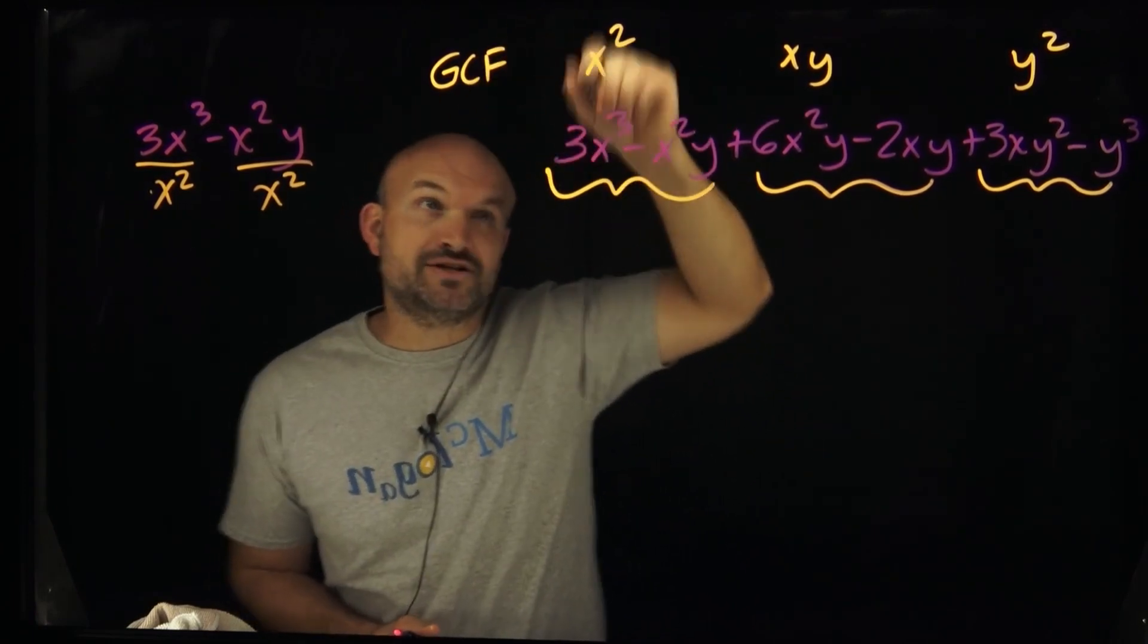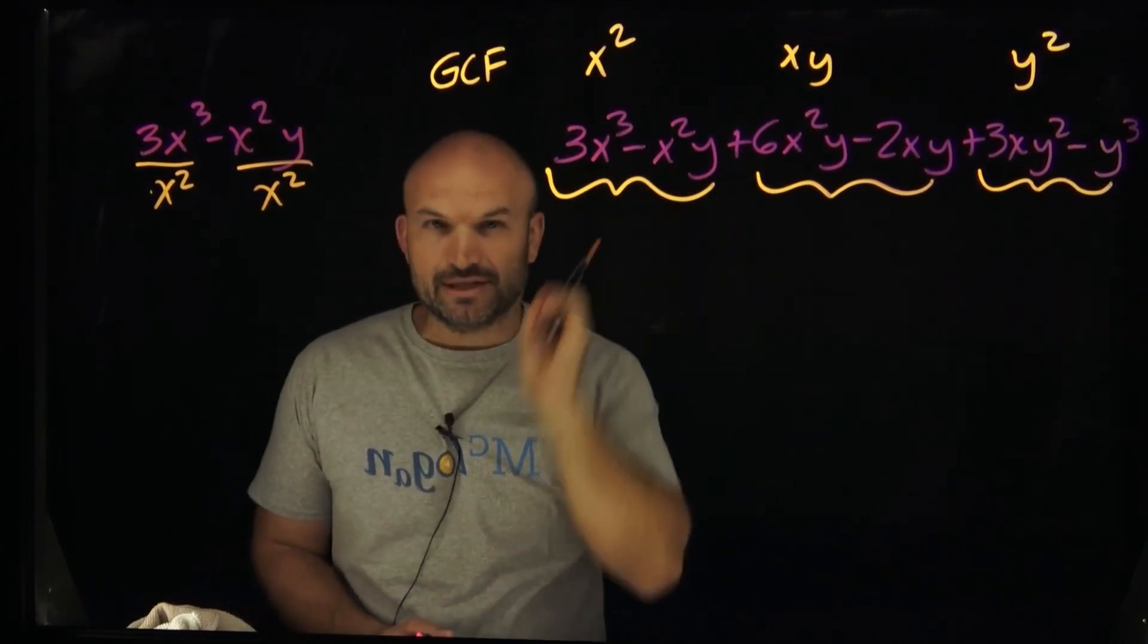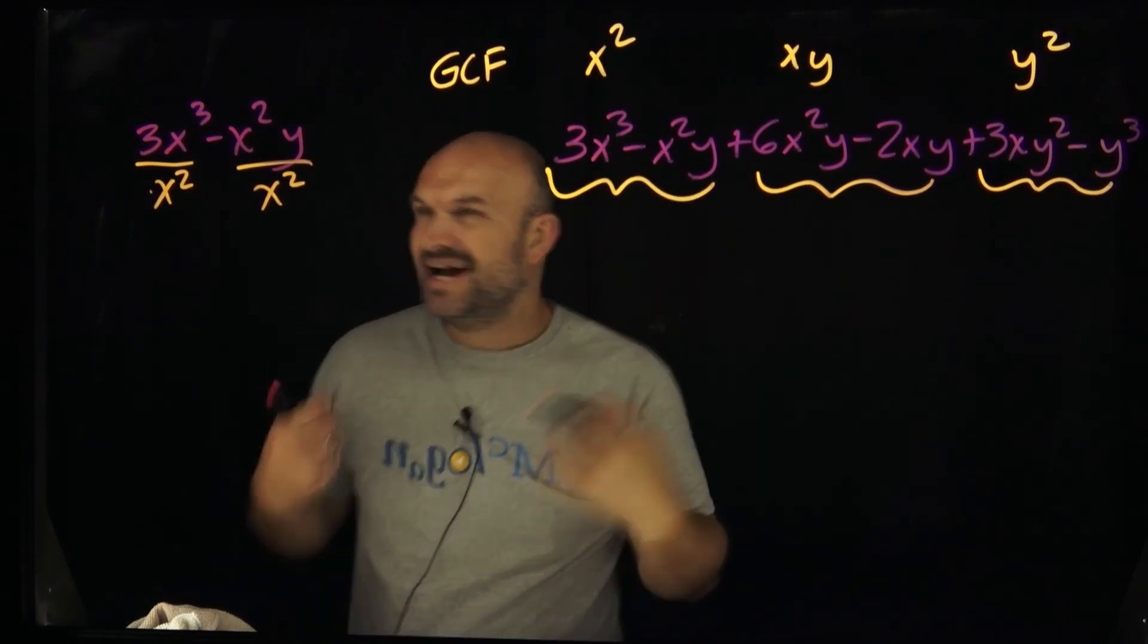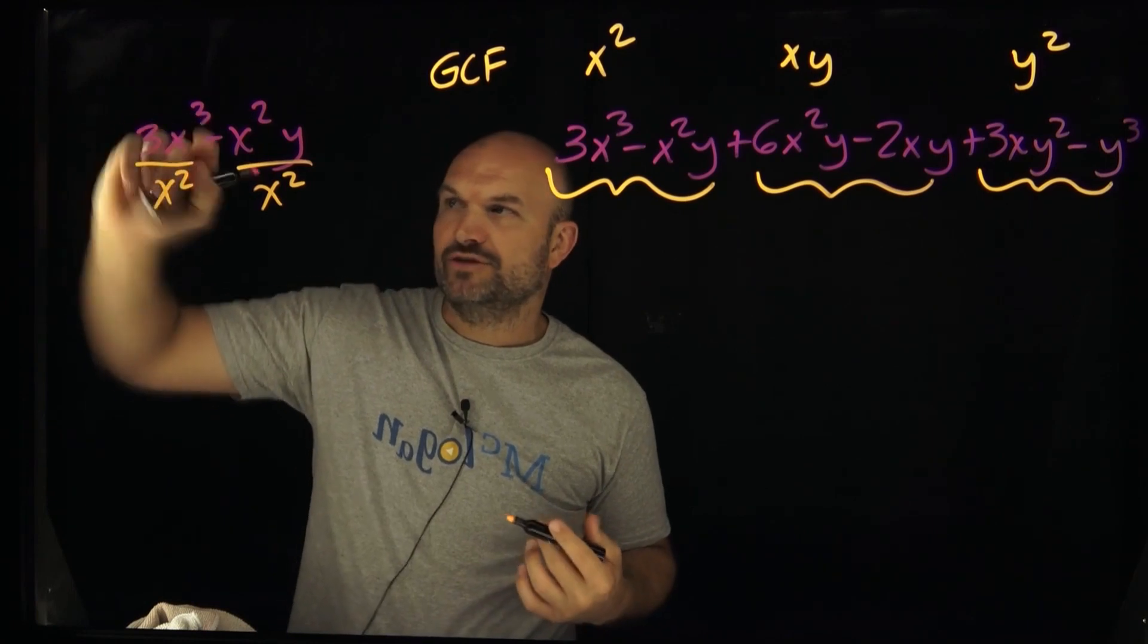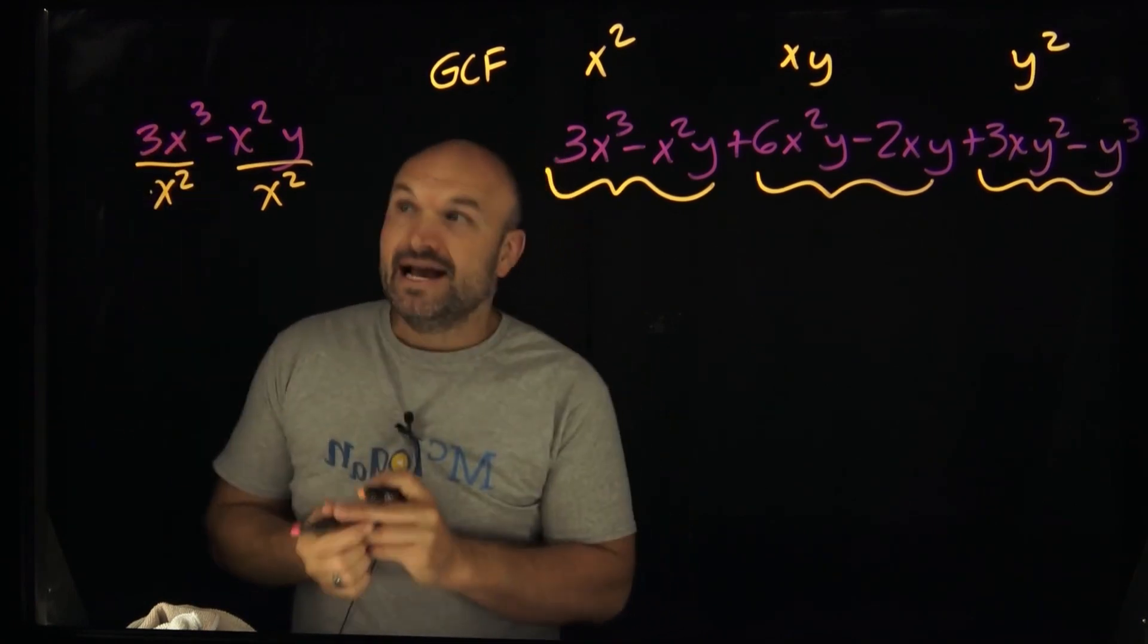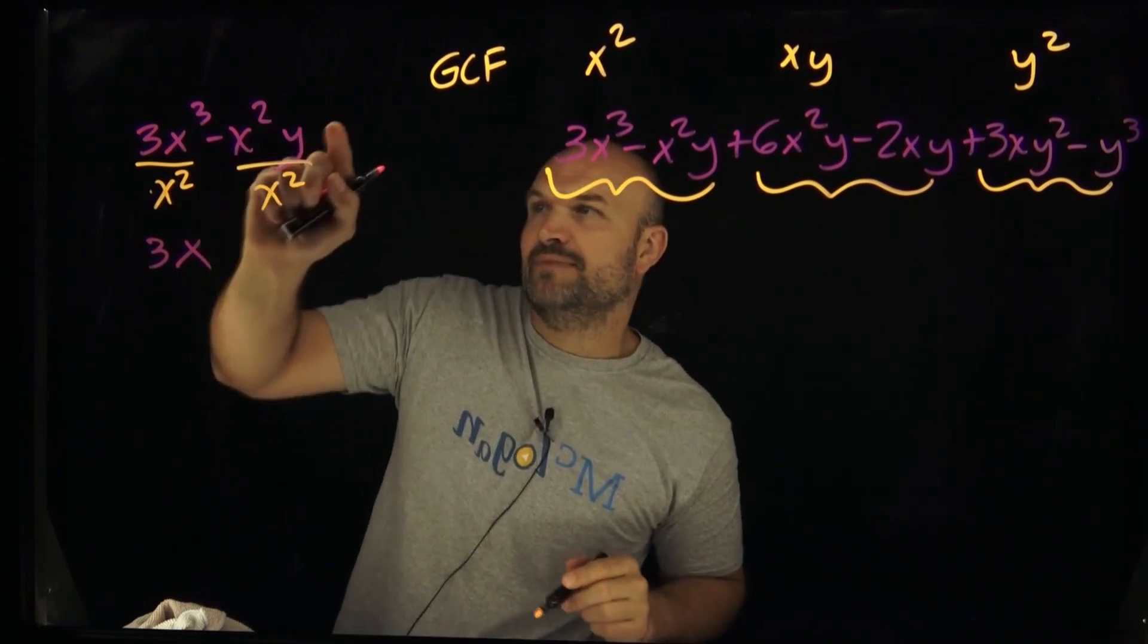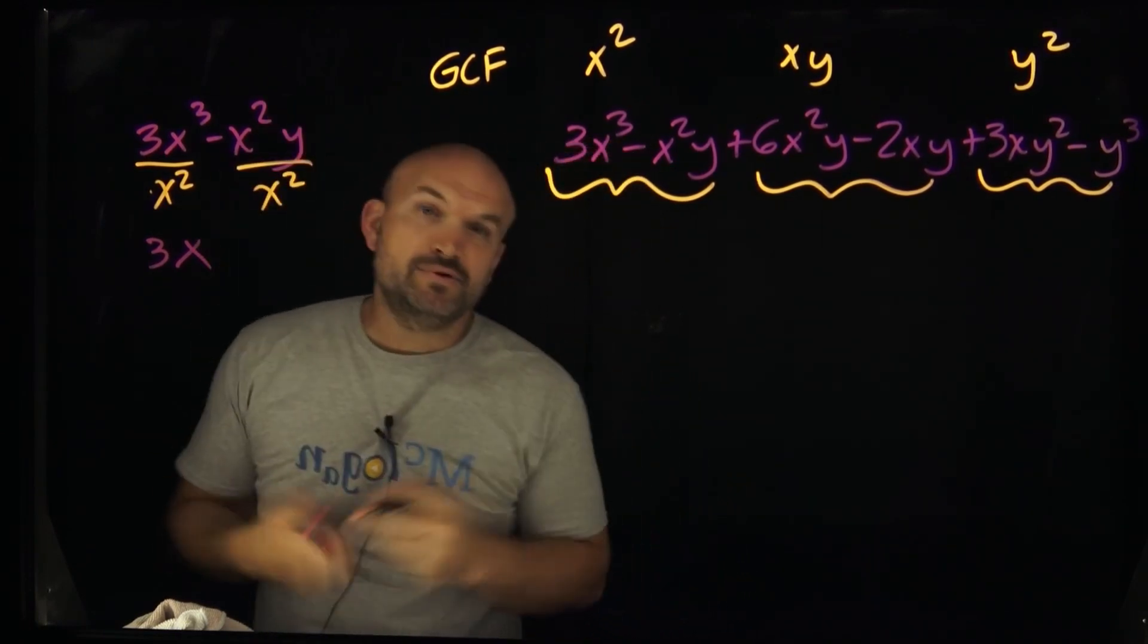Okay. So I recognize that the greatest common factor of these two terms was an x squared. That was the largest term that could evenly divide into both of them evenly. And let's go and see if that works. So x squared divided into 3x cubed, they're still going to leave me with a 3 as well as an x. And then here, I'm going to have an x squared divided by negative x squared times y. And that's just going to leave me with minus a y.